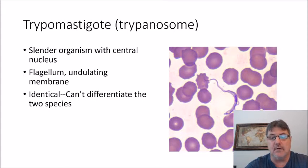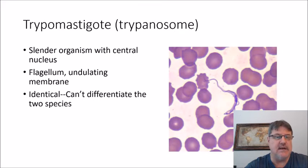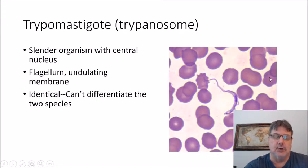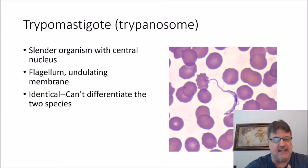The trypanosome is shown here in a blood smear photograph. It's a slender organism with a central nucleus. It's flagellated. You can see the undulating membrane along the body. Looking at this stage of the parasite in a blood smear, you can't differentiate the two species — they are identical.